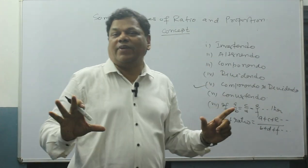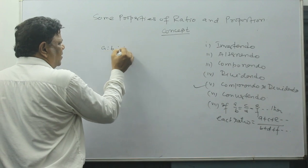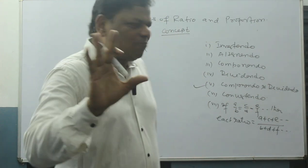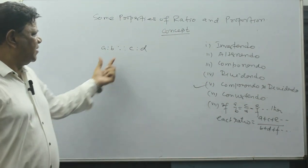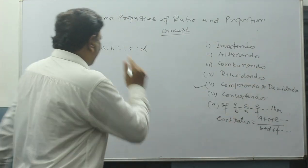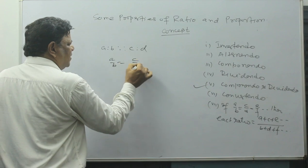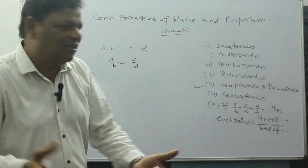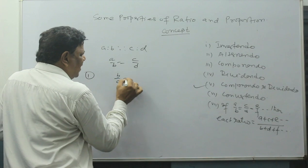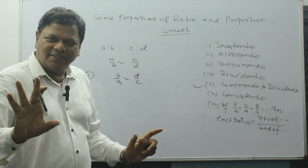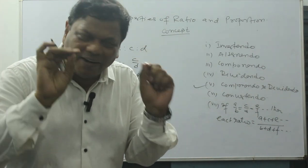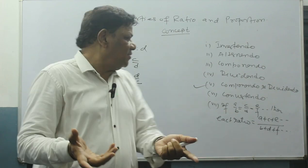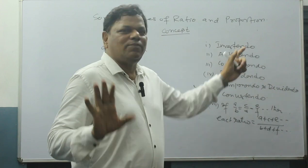One proportion is given: a is to b equal to c is to d, which I can write as a/b = c/d. Now the first property is Invertendo — inverse and opposite. If a/b = c/d is given, I have to write b/a = d/c. Invertendo means just write it in the opposite way: a/b becomes b/a, and c/d becomes d/c. That is all you have to remember for Invertendo.